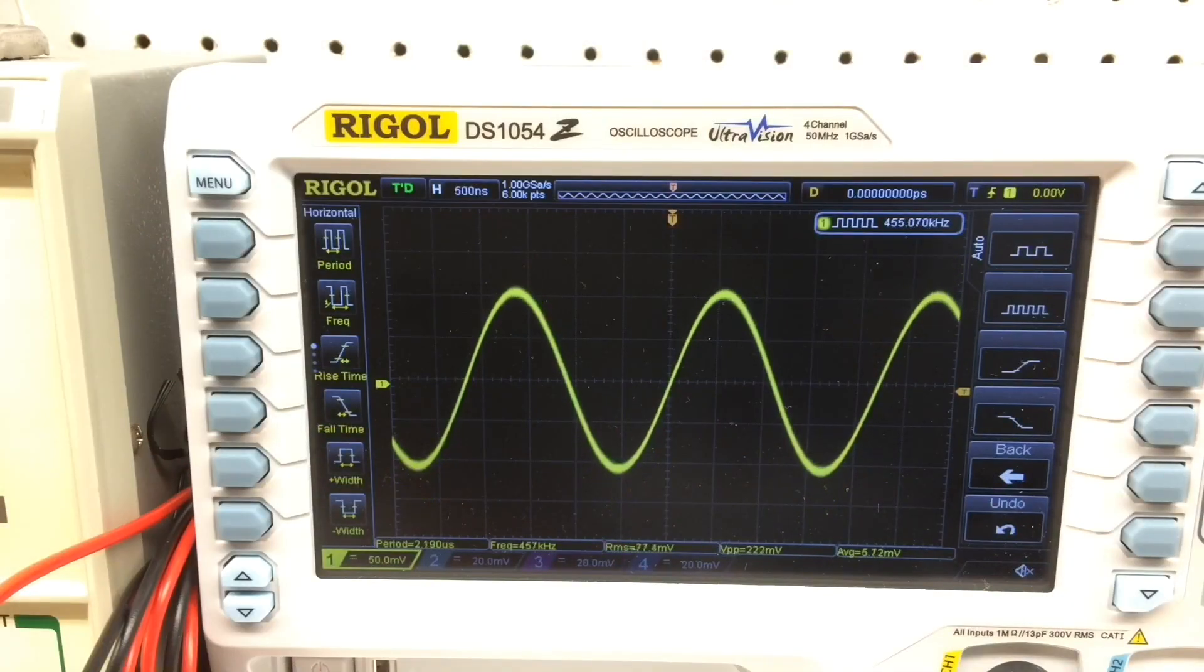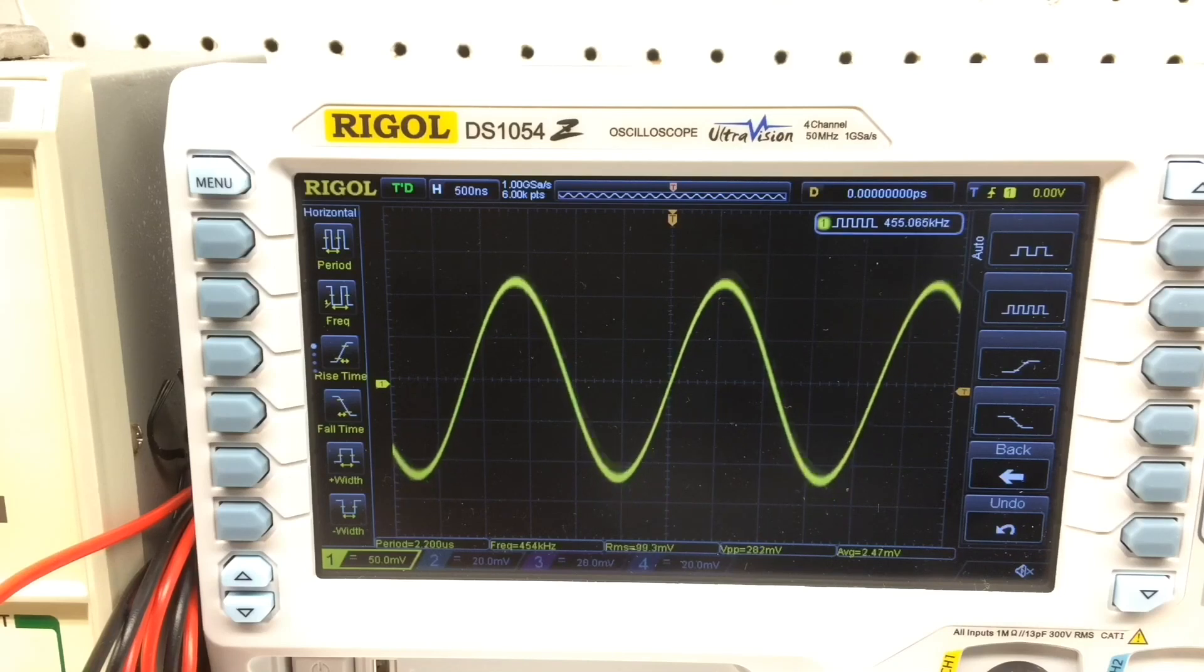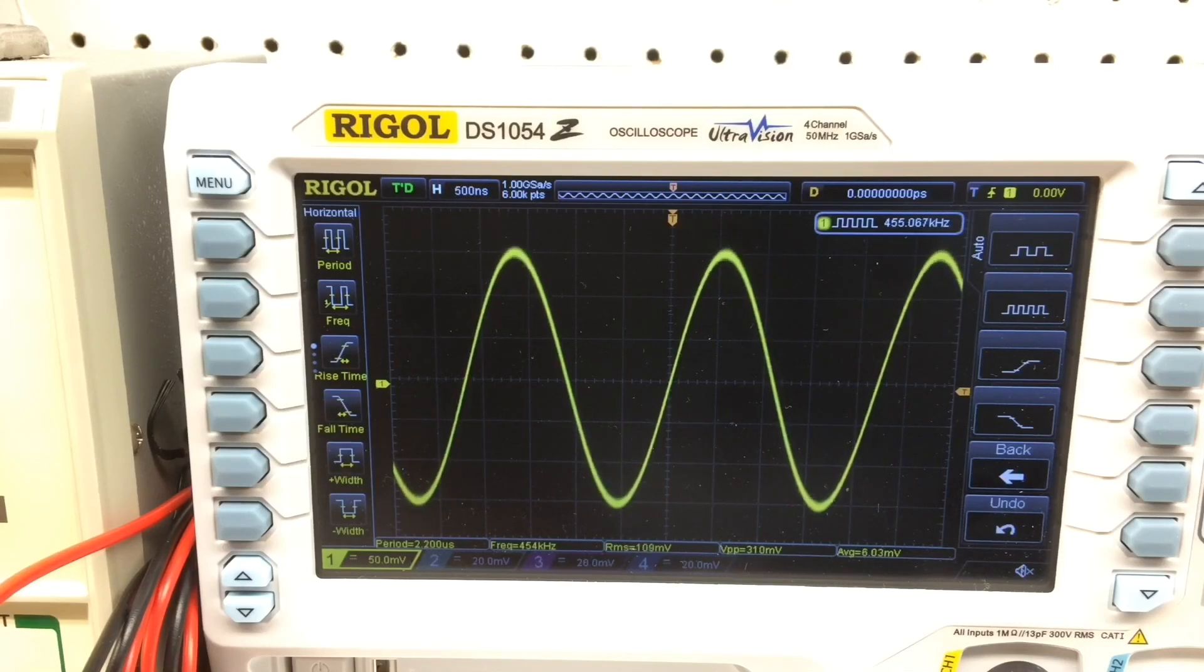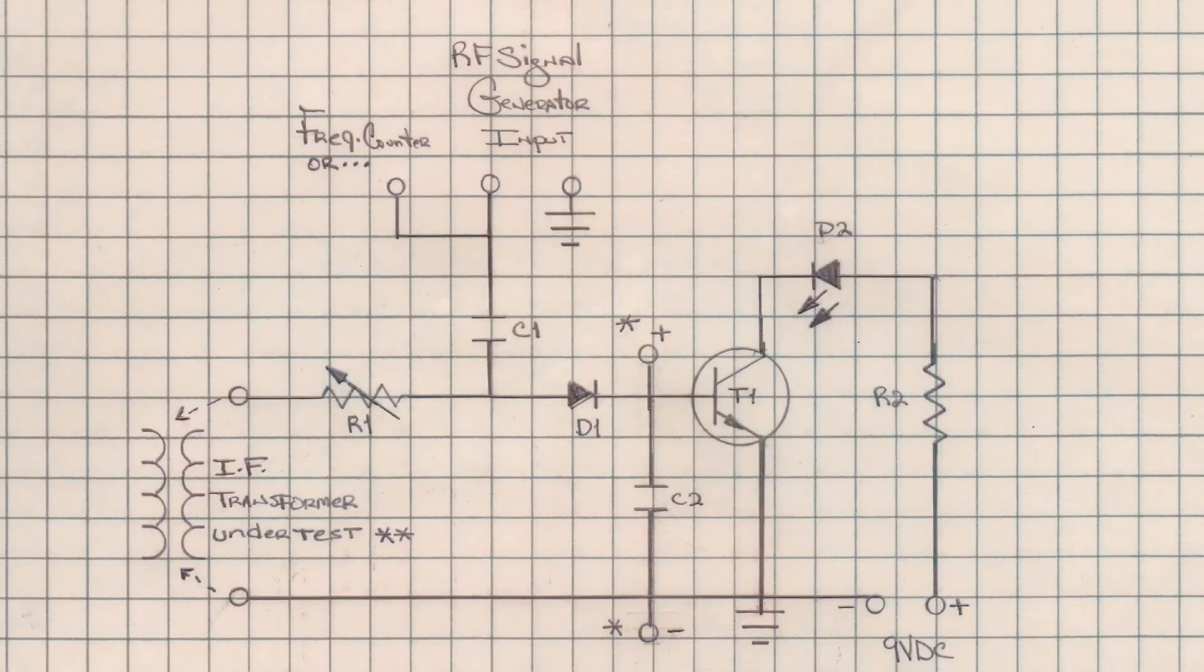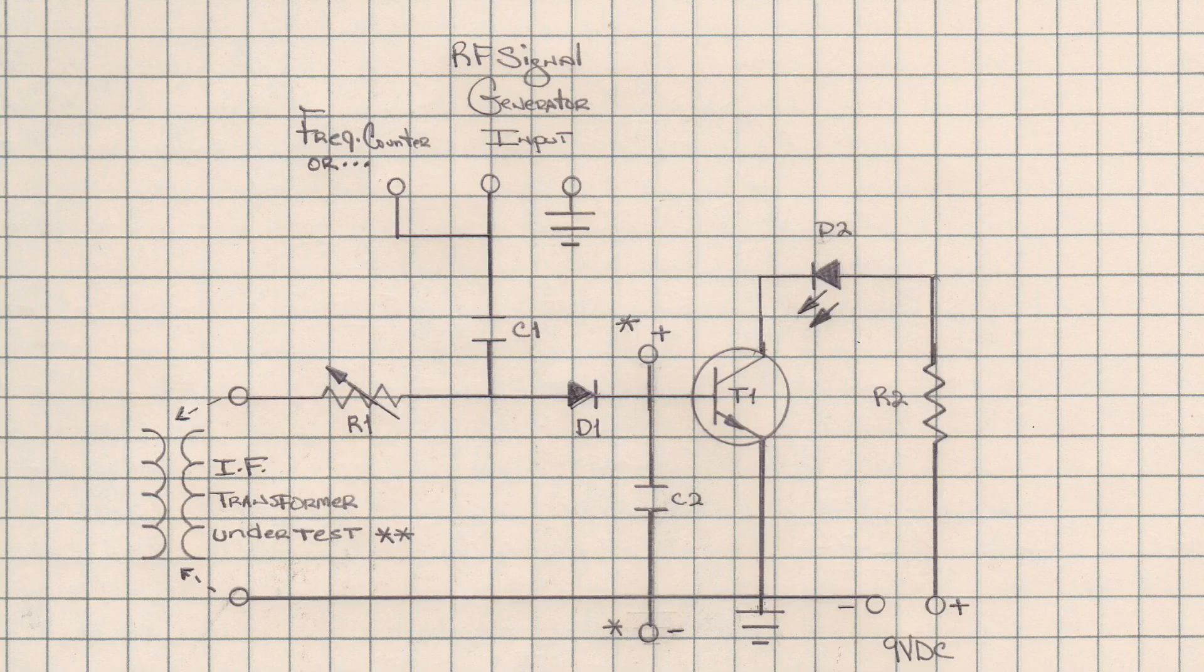And that's what kind of sparked the idea for me to make that little tester here that I'll share this schematic on. I named the circuit IF transformer resonant frequency finder. Again, it's very similar to a signal tracer. You can see I have my RF signal generator input. It goes through capacitor C1, which is a 10 picofarad capacitor, just to minimize the loading effect.